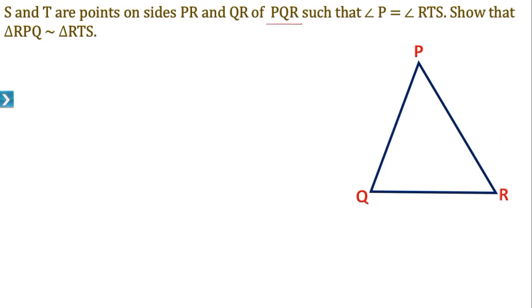Here S is a point on PR and T is a point on QR. Mark point S on PR and mark point T on QR, such that angle P is equal to angle RTS.